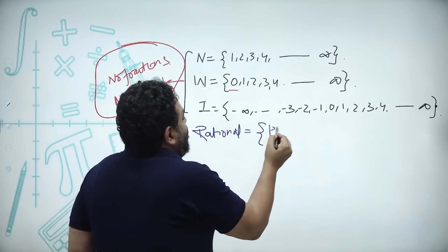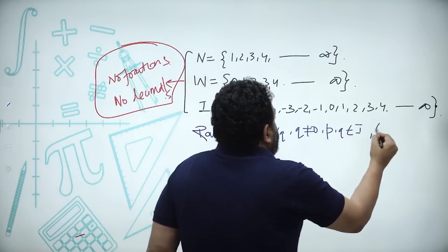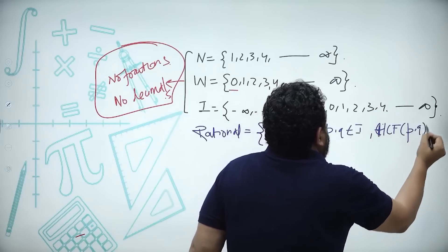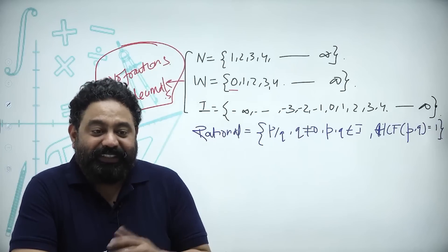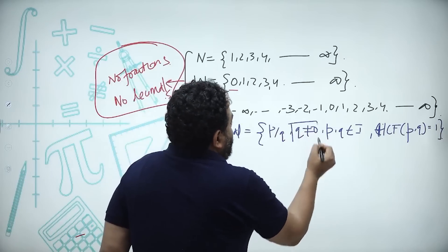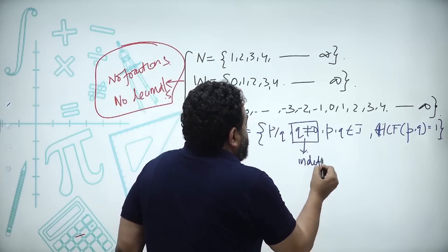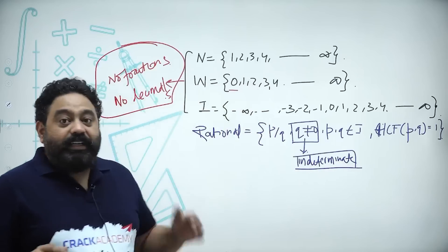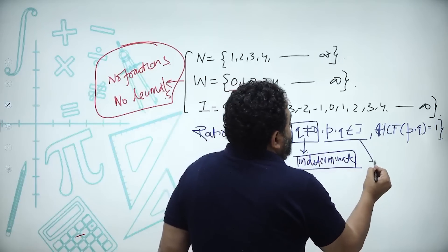After integers, we come to rational numbers. A rational number is of the form p upon q, where q is not equal to zero, p and q belong to integers, and the HCF of p and q is one. Anything divided by zero is indeterminate — it cannot be determined. Fractions can be negative, and p and q must be integers.